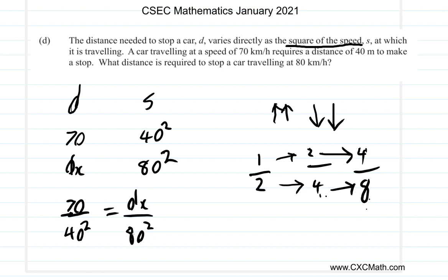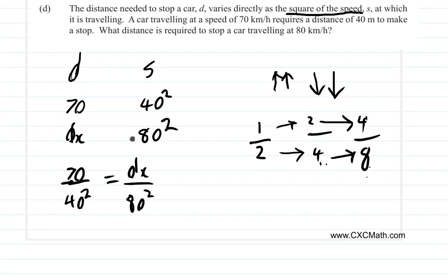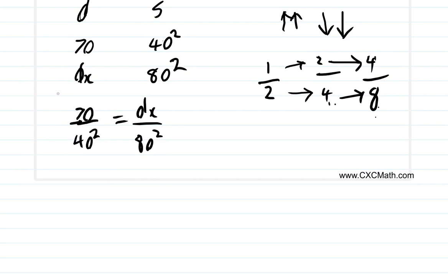Whatever the distance is, 70 divided by 40 squared is equal to dx, whatever it is, divided by 80 squared. That's how you're going to set up this working.